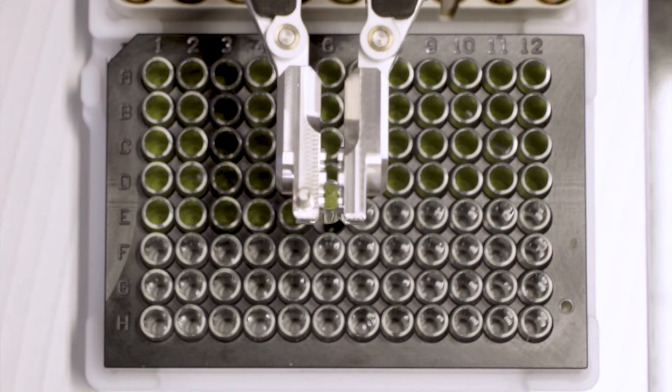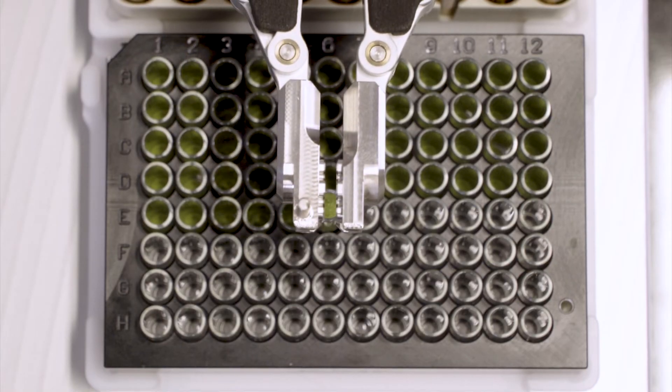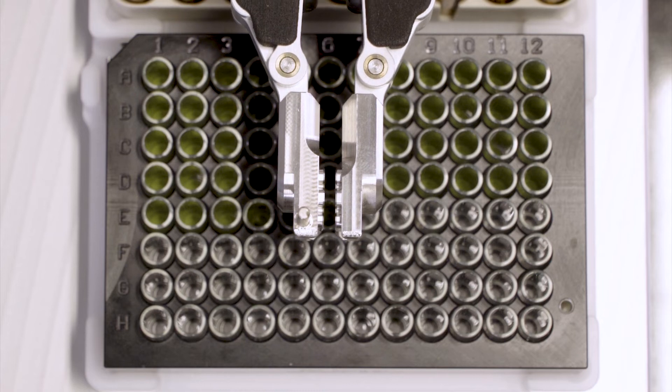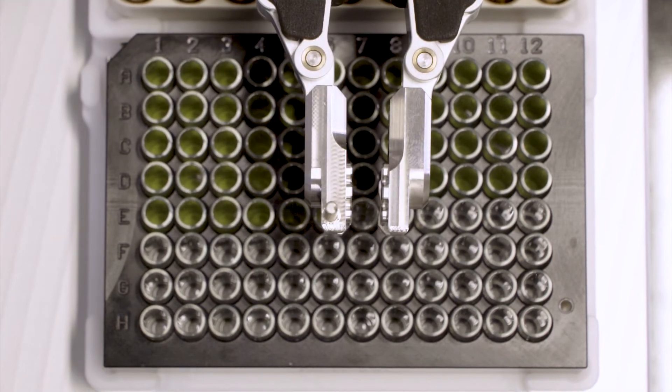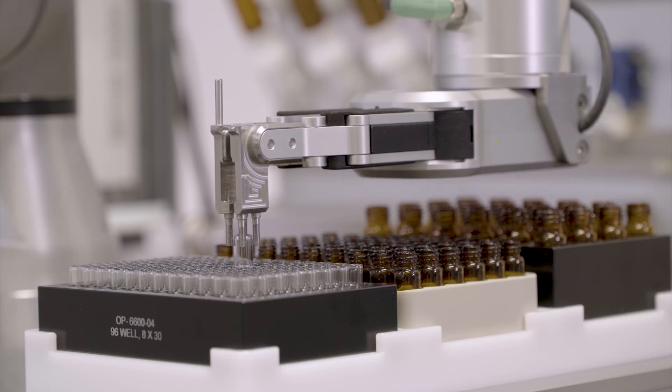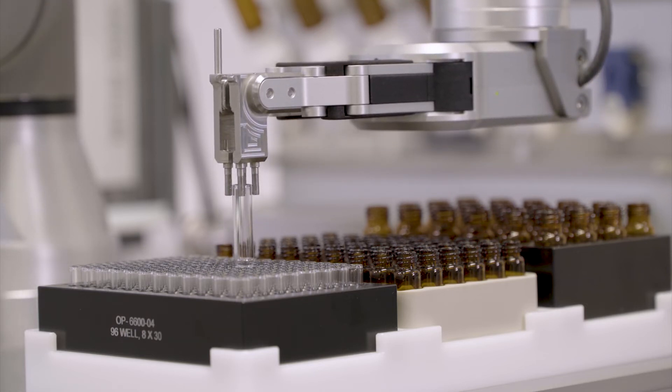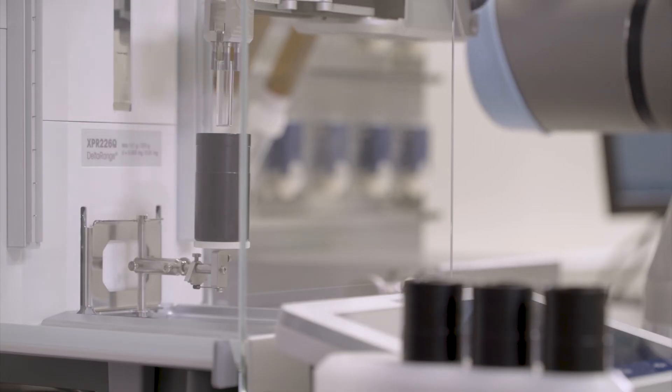A 96-vial plate can be dispensed in two and a half hours or less. The Cronect XPR can prepare up to 288 samples in one run.